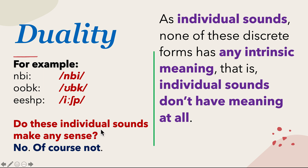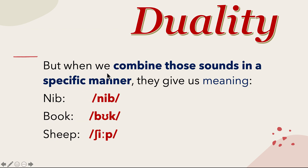So do these individual sounds make any sense? No, of course not. But when we combine those sounds in a specific manner, they give us meaning. For example, 'na', 'e', and 'ba' gives us 'nib'; 'ba', 'oo', and 'ka' gives us 'book'; and 'sha', 'e', and 'pa' gives us 'sheep'. So they have meanings, because we have combined them in a specific manner.